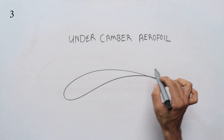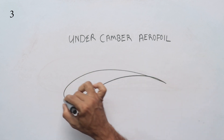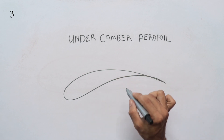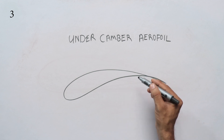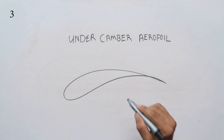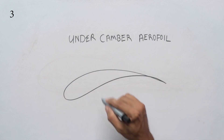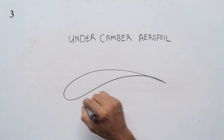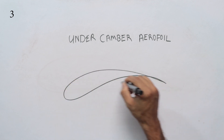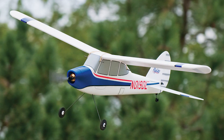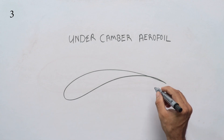The under-camber Aerofoil has a curved lower surface. It is suited for slow-flying planes. In the beginning, if we build a slow-flying trainer plane, we will use this under-camber Aerofoil. It allows the aircraft to fly very slowly and is good for practice.